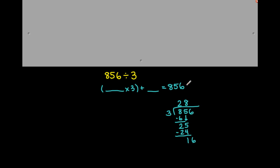So 3 goes into 16 how many times? 5 times — we go 3, 6, 9, 12, 15 — 5 times. So 3 times 5 is 15, and again our remainder is less than the divisor. So we can say that 856 divided by 3 is 285, with a remainder of 1. We're saying that 285 times 3 plus 1 more will give you 856.